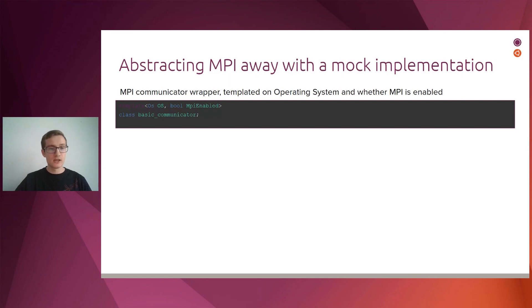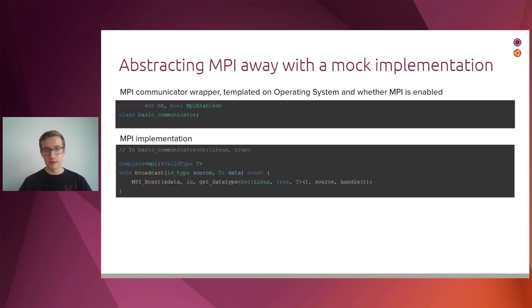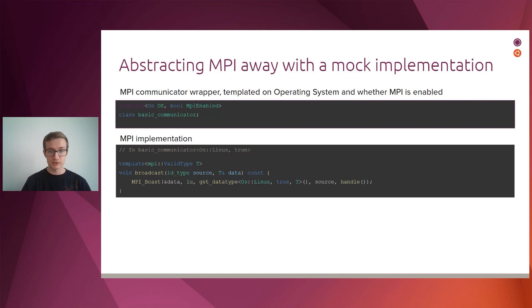Here we have, for instance, a class called BasicCommunicator, which is the basic unit of MPI. As you can see, it templates on what operating system we're running on, as well as whether you want to enable MPI or not. This is what the wrapper looks like on Linux with MPI enabled — it's simply a C++ method of that class that calls the MPI C library, with a bit of conversion.